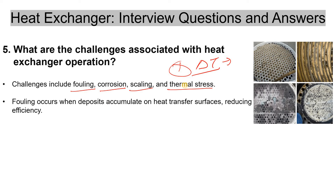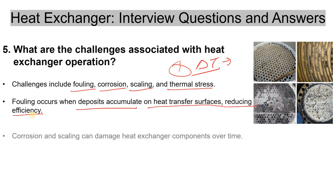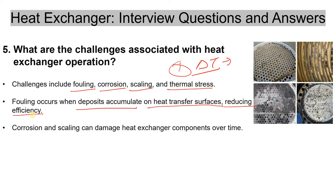Fouling occurs when deposits accumulate on heat transfer surfaces, reducing efficiency — which is why we do hydro jetting or back washing. Corrosion and scaling can damage heat exchanger components over time, which is why we include a corrosion allowance during design, and address scaling through hydro jetting and chemical cleaning.